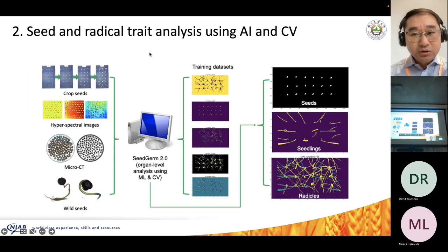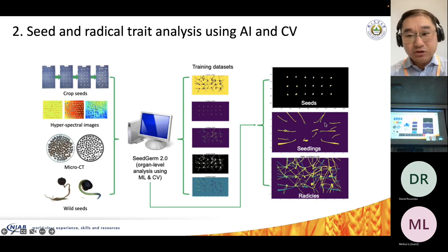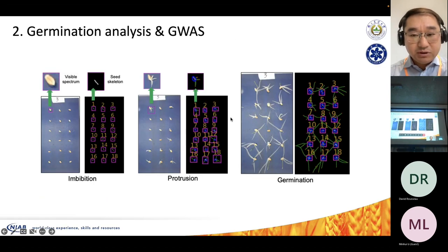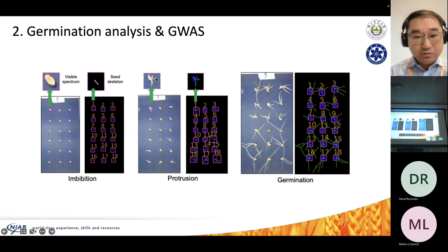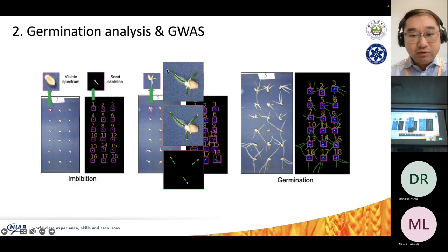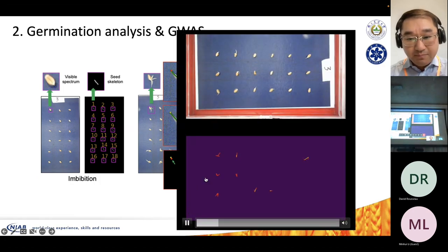We've been training on different parts of the germination process — seed level, seedling level, and radicle level — and feeding them into the new CGem 2 system. The new CGem 2 system allows us not only to look into seed morphology but also to use graph theory to track how the radicle changes over time. The radicle tip and edges allow us to rebuild and reconstruct the system.